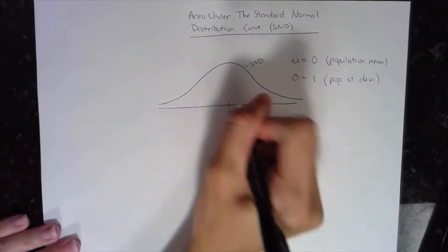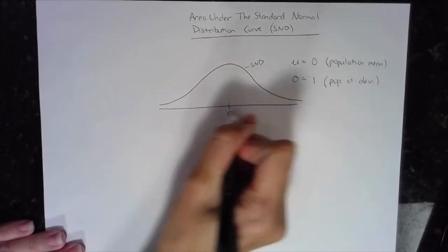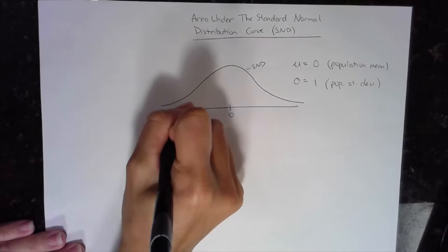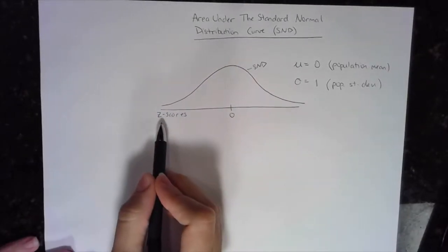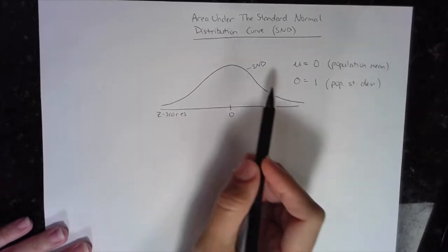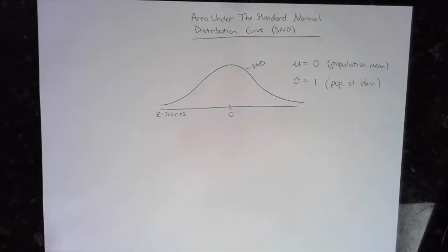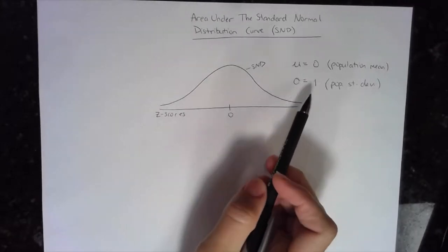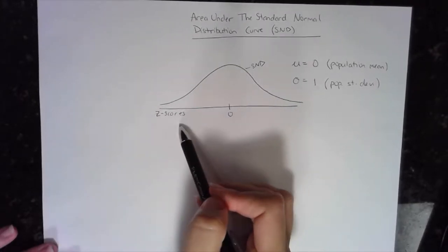The center of this curve is zero, and all the values along the horizontal are called z-scores. So all these go hand in hand. If you are referring to z-scores, you're referring to values along the horizontal axis on an SND curve, and automatically you know that the mean is zero and the standard deviation is one, and vice versa.